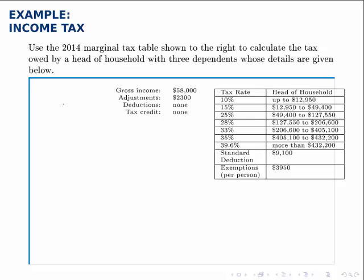Just like before, we'll start with the gross income and subtract off any adjustments, exemptions, and deductions. We start with the gross income of $58,000, subtract off the adjustments, and then for the deductions, since there are no itemized deductions, we'll automatically take the standard deduction.